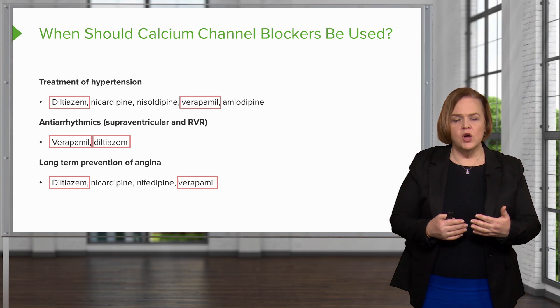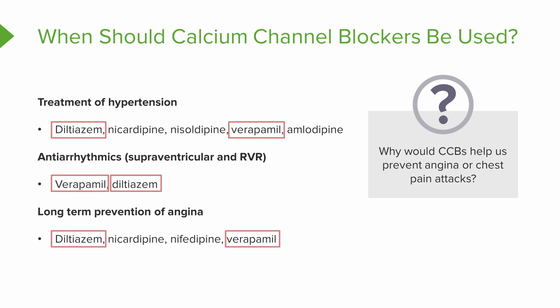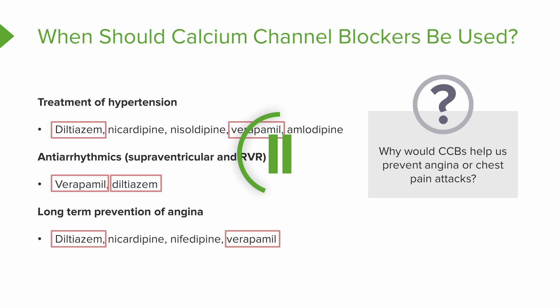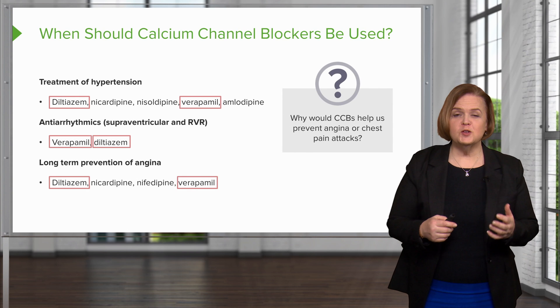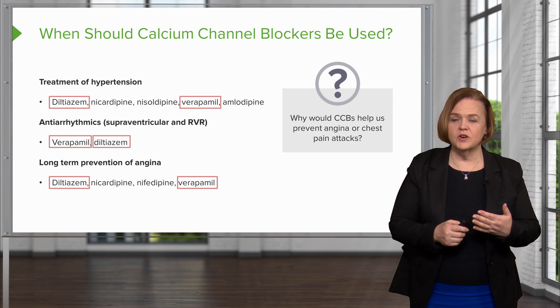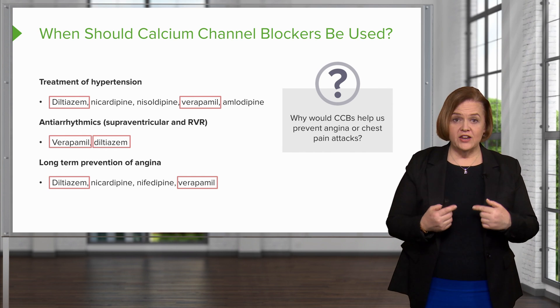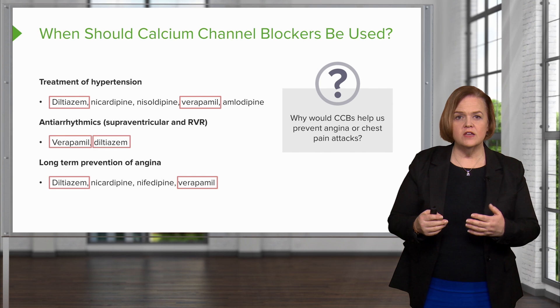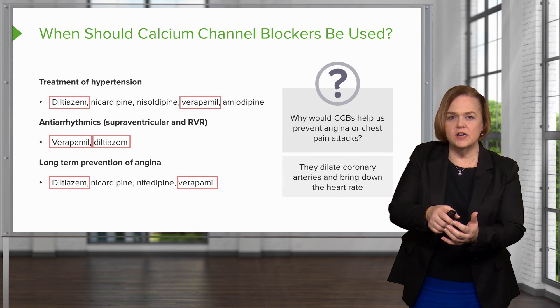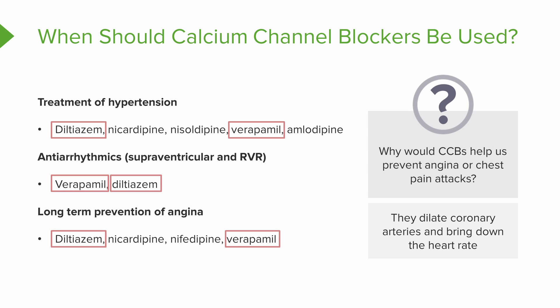Based on what you know about calcium channel blockers, why would one help us prevent angina or chest pain attacks? Pause the video and write yourself some quick notes. Calcium channel blockers help with long-term prevention of angina because they dilate those coronary arteries — that's a really good move — and diltiazem and verapamil will also bring down your heart rate. Those effects decrease how much oxygen the heart needs and provide easier blood flow.